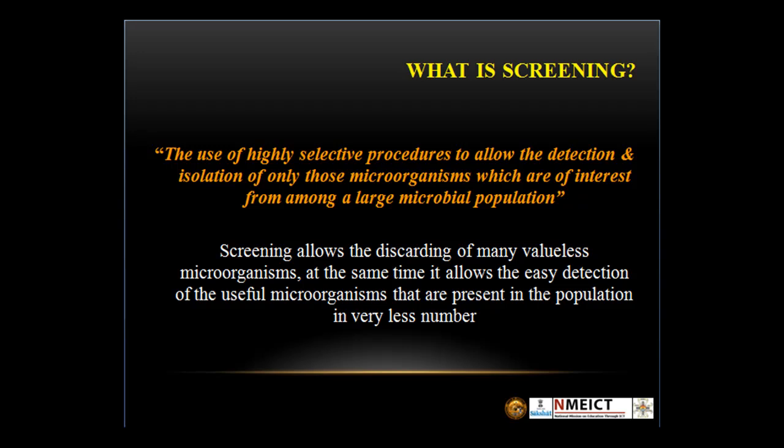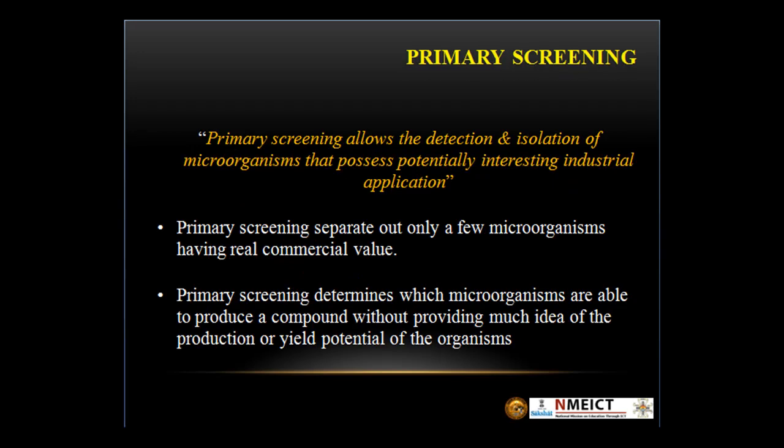What is primary screening? Primary screening allows the detection and isolation of microorganisms that have potentially interesting industrial applications. It separates out only a few microorganisms having real commercial value, and determines which organisms are able to produce a compound without providing much idea of the potential of the organisms to produce a particular product.